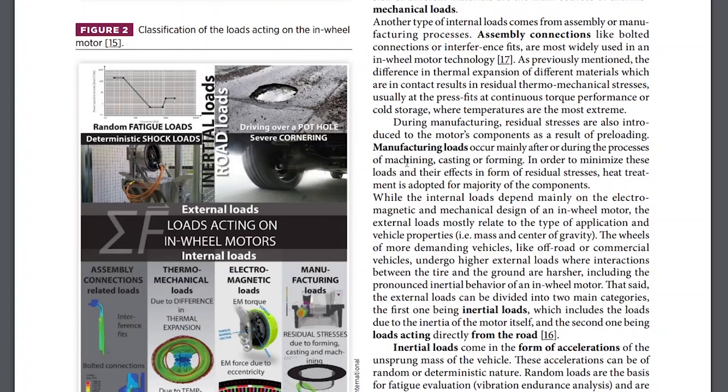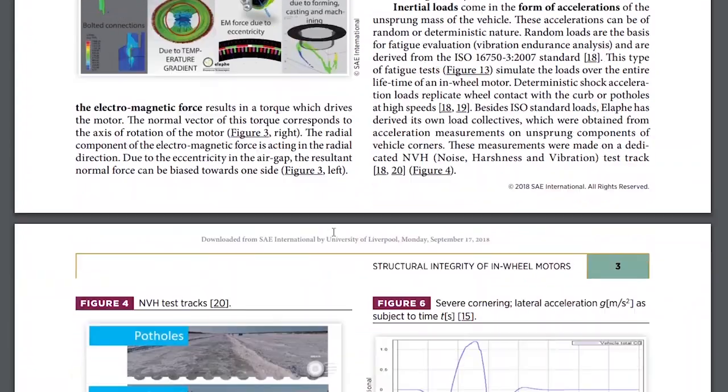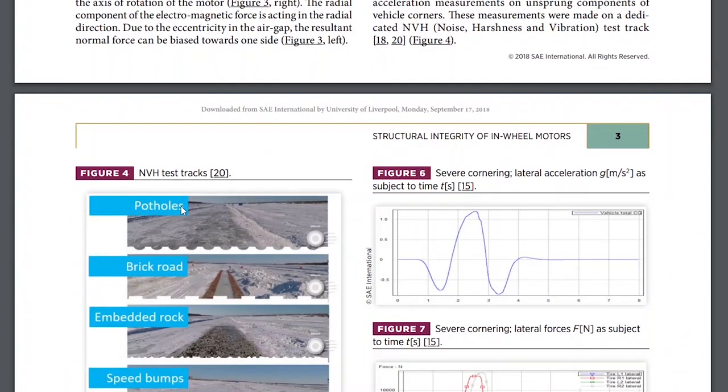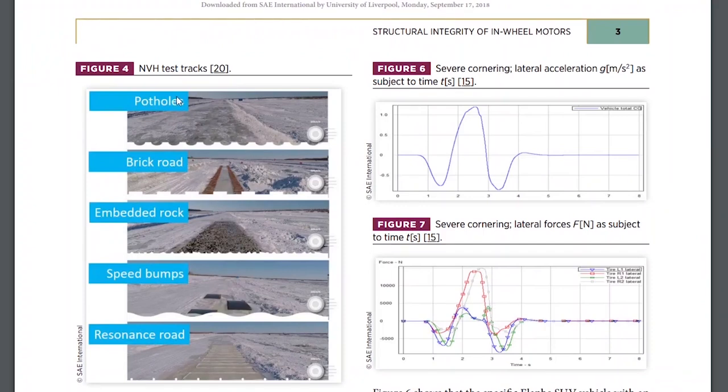Then they're talking about manufacturing loads during the manufacturing and assembling loads to the suspension parts. And then they're talking about inertial loads. So they talk about the NVH test, where basically they run the car over potholes and brick roads and embedded rock and speed bumps and resonance. Okay, so they have a video on that. Let's watch that.